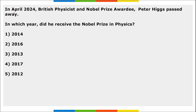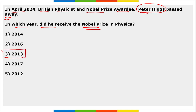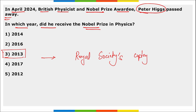Next: British physicist and Nobel Prize awardee Peter Higgs passed away in April. In which year did he receive the Nobel Prize in Physics? He received the Nobel Prize in Physics in 2013. Apart from this, he also won the world's oldest scientific prize — the Royal Society's Copley Medal — for his works on the so-called God Particle.